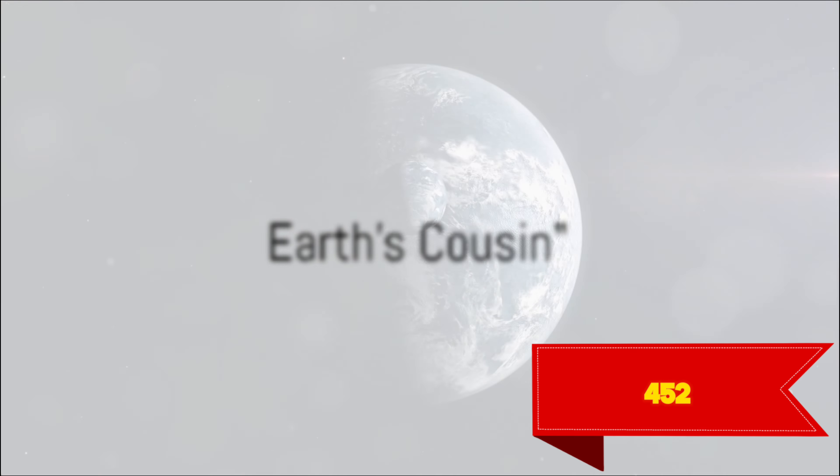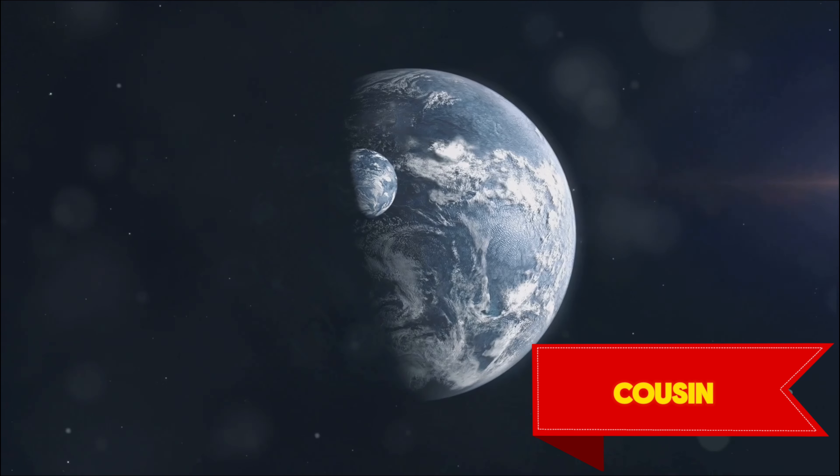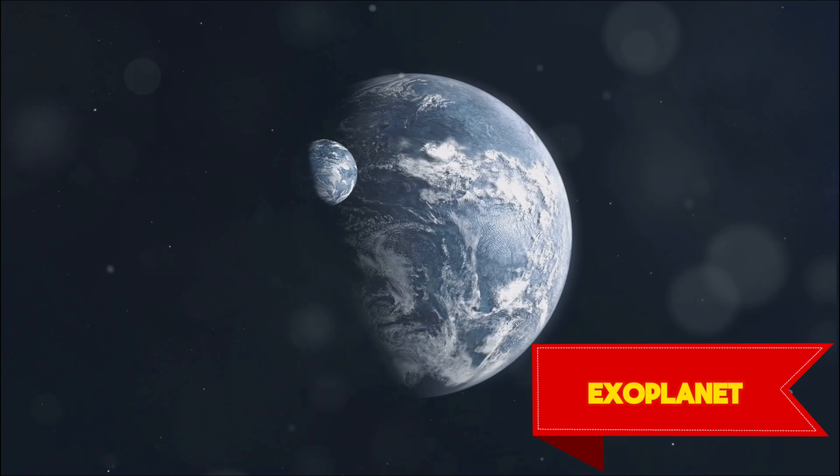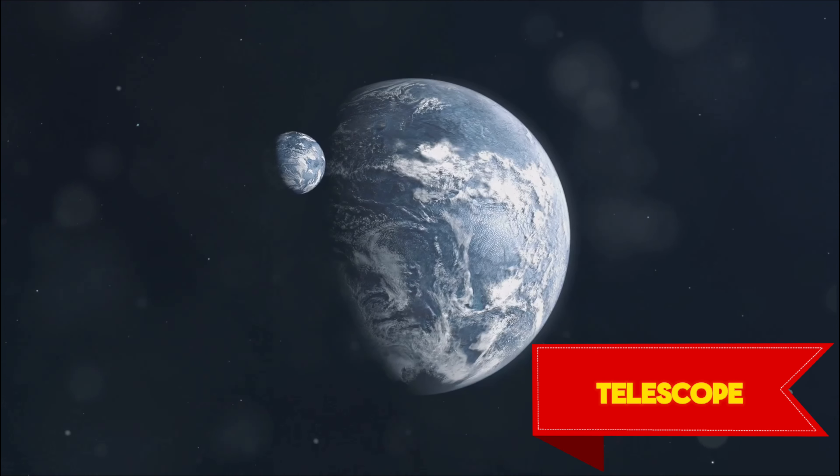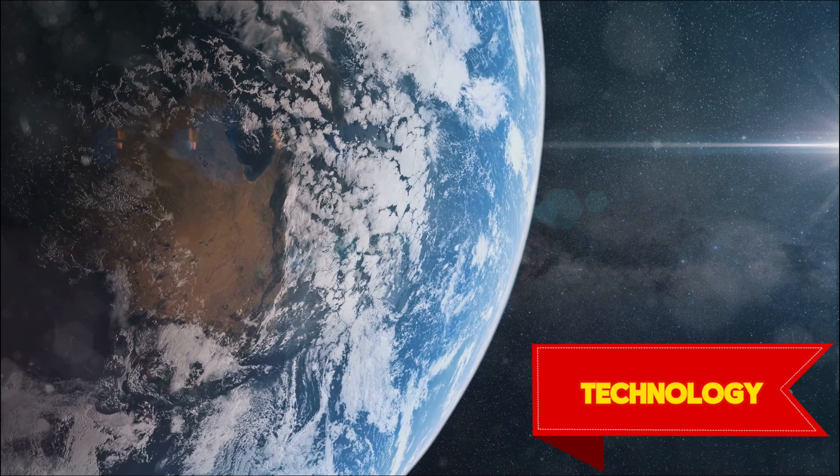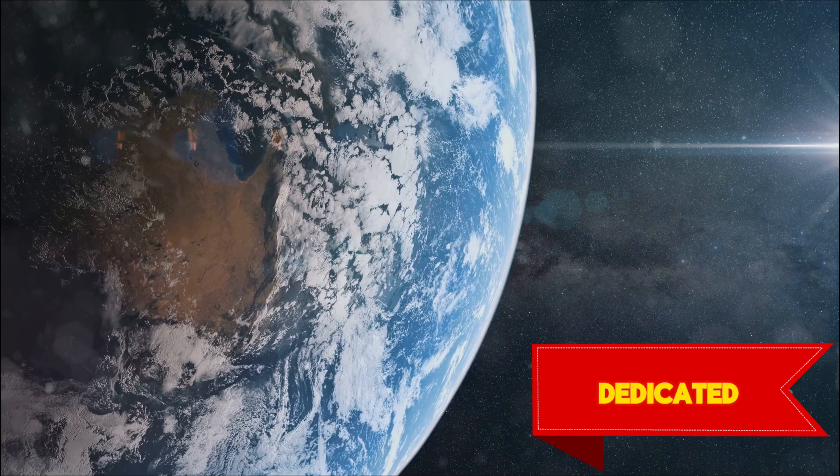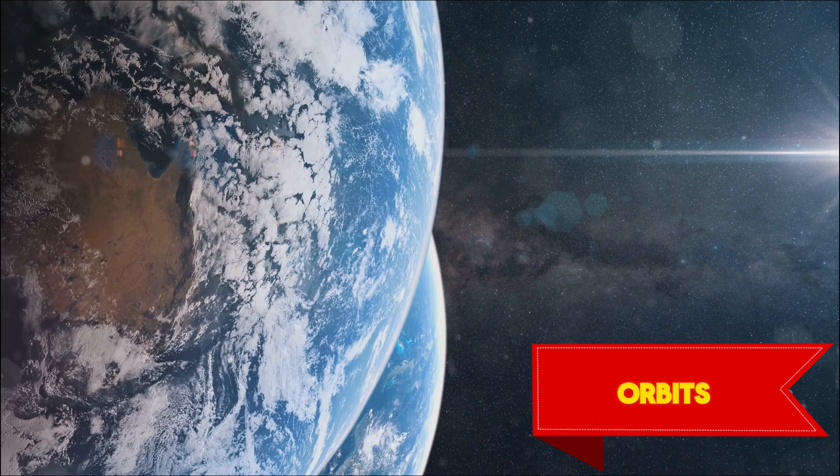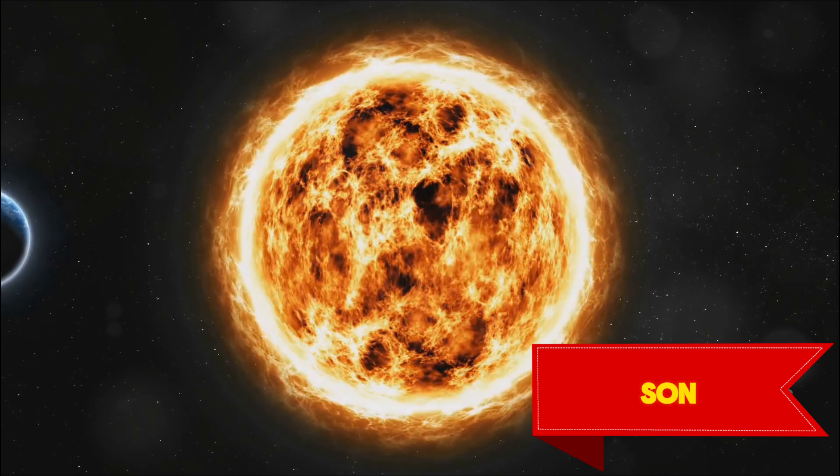Next, we set our sights on Kepler-452b, famously known as Earth's cousin. This intriguing exoplanet was discovered by the Kepler Space Telescope, a marvel of modern technology dedicated to hunting for planets in far-off solar systems. The reason for its nickname: Kepler-452b orbits a star eerily similar to our own Sun.